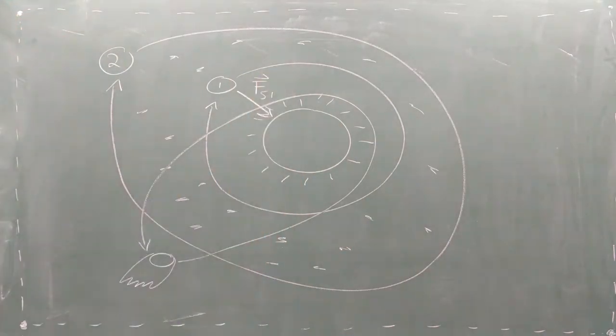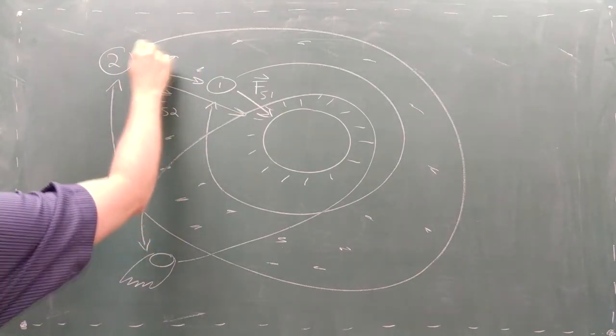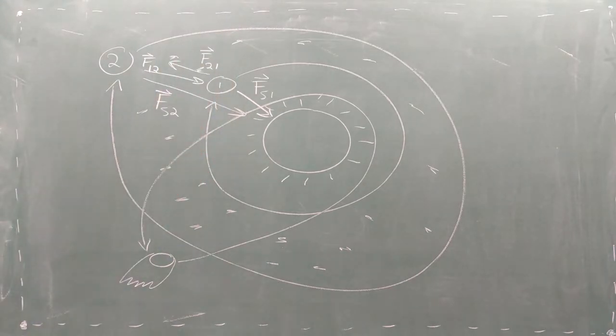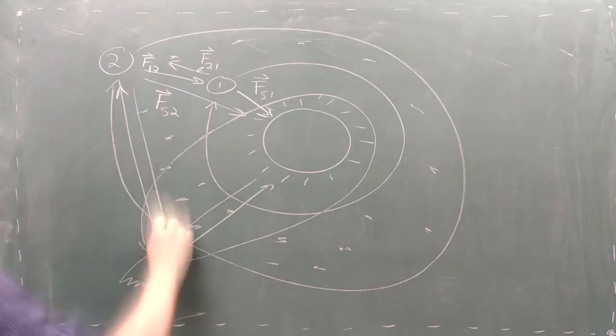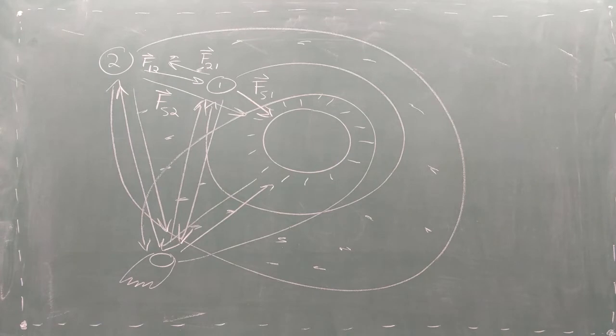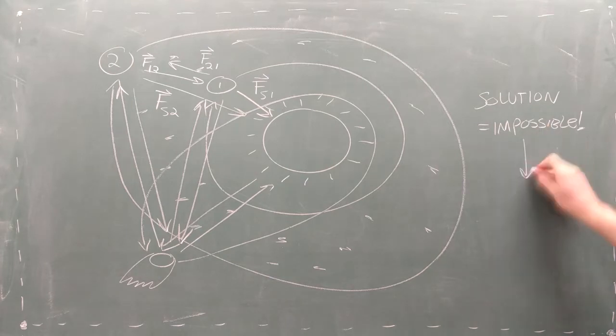Each object's orbit is primarily shaped by the force between it and the star. But all those other objects in the planetary system, no matter how small, also exert a gravitational force on each other. Once we have more than two objects in a planetary system, the mathematics becomes impossible to solve by hand, and we must turn to a computer simulation.